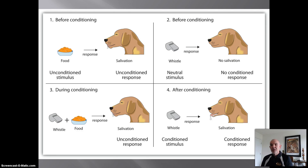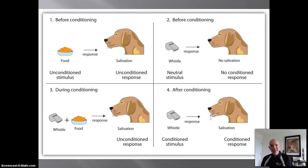Then, during conditioning — or what we call acquisition — you blow the whistle with the presentation of food and we get salivation. At this point the dog is still salivating because of the food, not the whistle. The pairing of the whistle followed by the food has to be done multiple times in acquisition. Then, after conditioning, we blow the whistle without presenting the food — and the dog salivates. Classical conditioning has occurred.